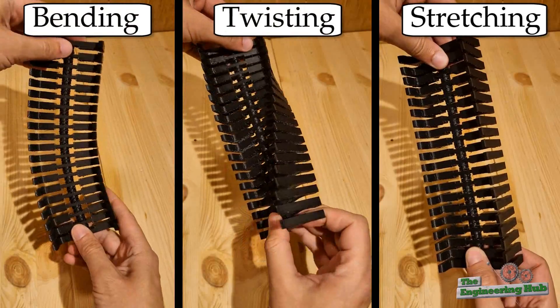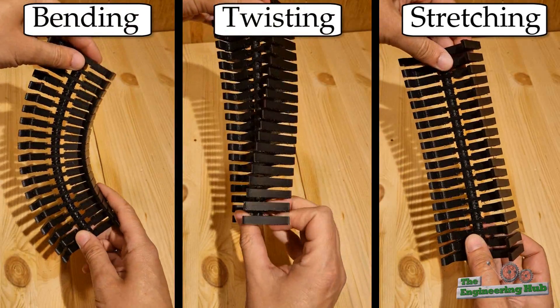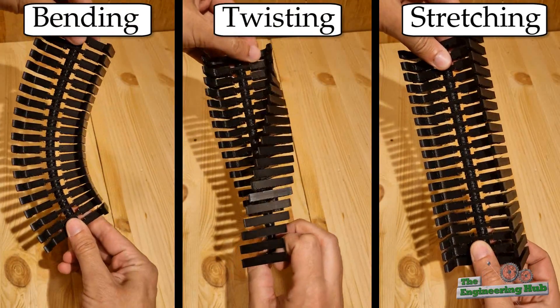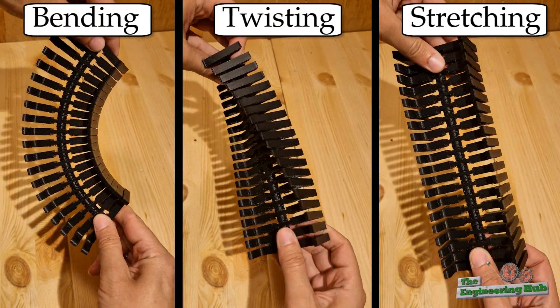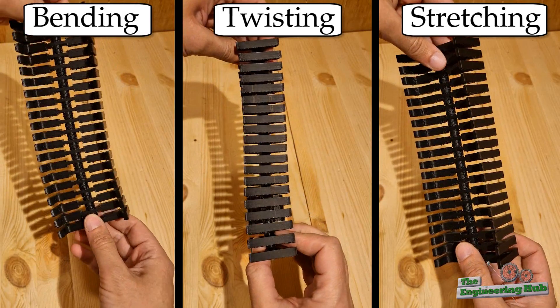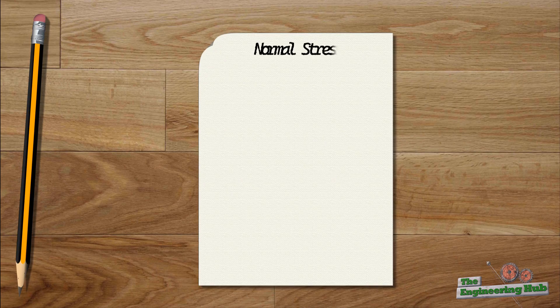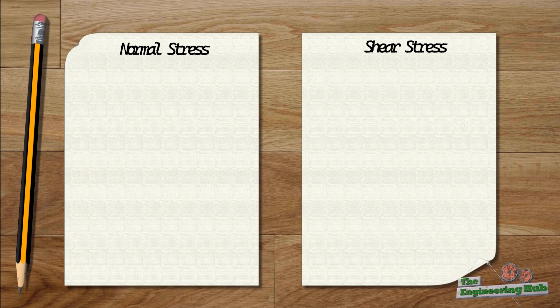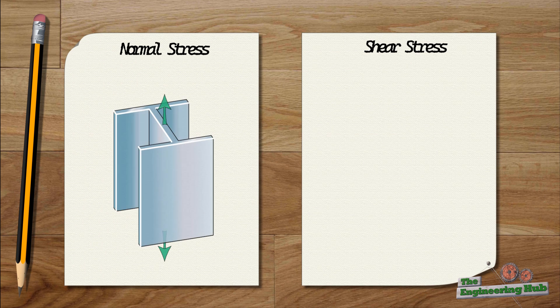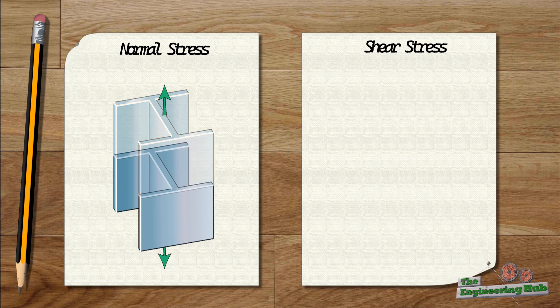Let us first refresh our understanding of stress. The three types of actions listed earlier give rise to stresses which act on a surface. The stress can be either a normal stress or a shear stress. Normal stress arises due to stretching or compressing of the material — it is basically the force that the member resists divided by its cross-sectional area.